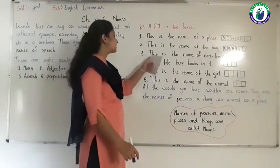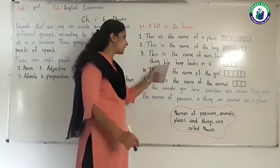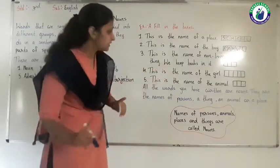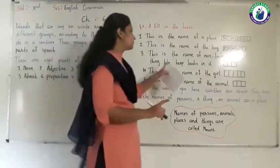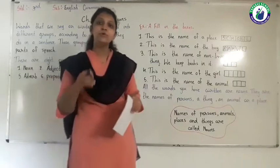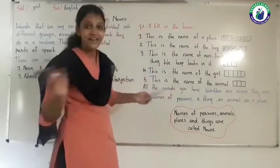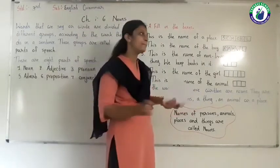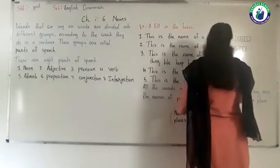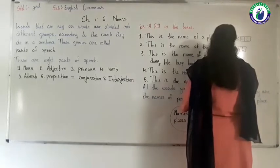Now next, number 3: this is the name of a non-living thing. We keep books in it. What is that thing? Bag. So I write the spelling of bag: B-A-G, bag.